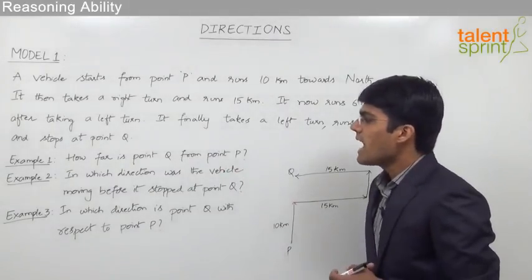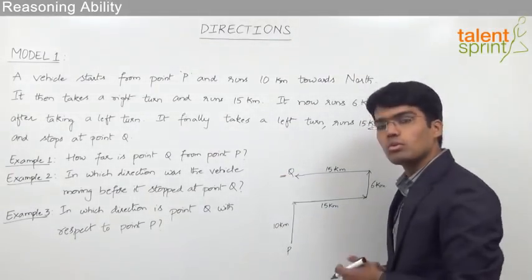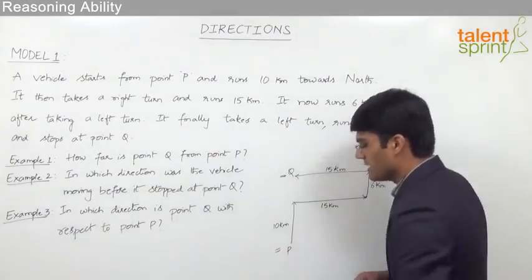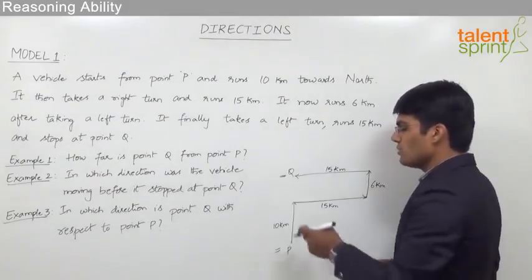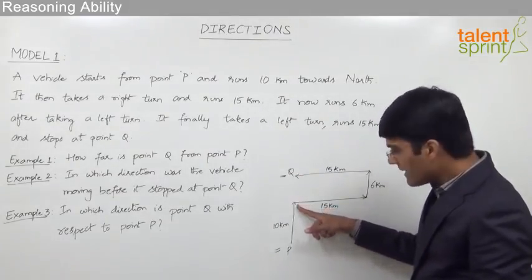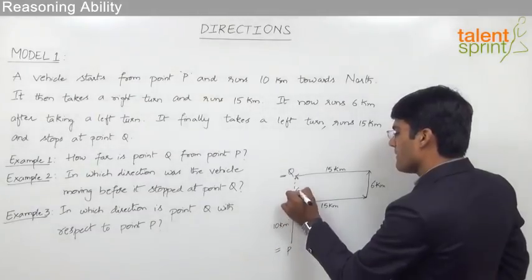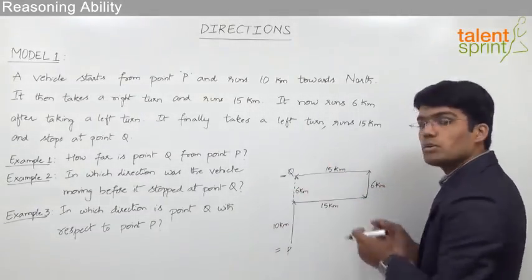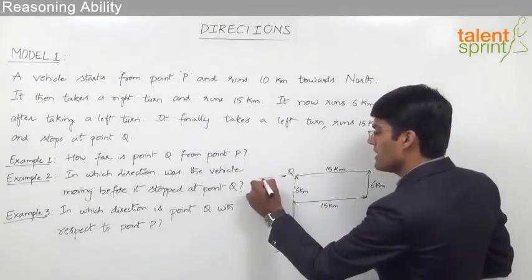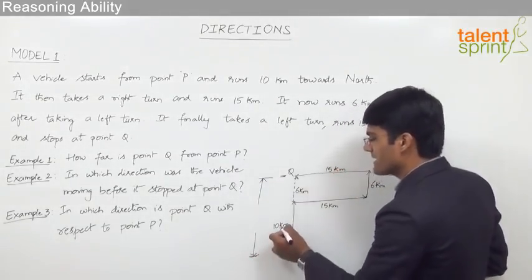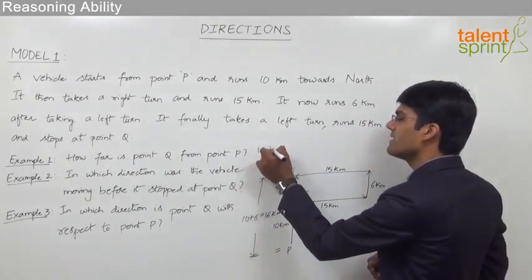The first question is how far is point Q from point P? The distance between P and Q can be taken as 10 kilometers plus the distance between the two vertically aligned points, which is 6 kilometers, since those two segments are parallel to each other. So the overall distance between point Q and point P is 10 plus 6, which is 16 kilometers.